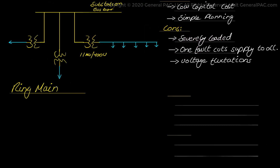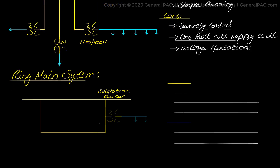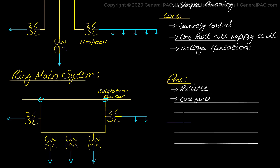Secondly, we have the ring main system. In this type of system, the primary side of the distribution transformers are linked to form a loop. The loop circuit starts from the substation bus bars, makes a loop through the area to be served, and returns to the substation. Therefore, it consists of at least two paths between the substation and the consumer. The ring main system is very reliable as each distributor is fed by two feeders, and if a fault occurs at any single point in the feeder, the continuity of supply will be maintained. Consumers also face fewer voltage fluctuations due to the injection of current from both points.